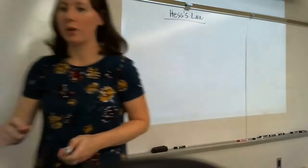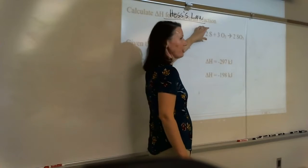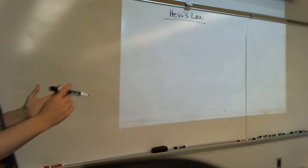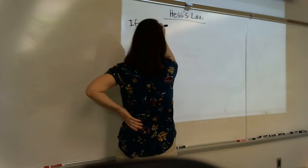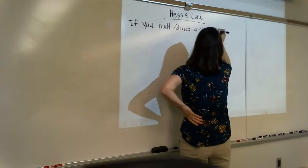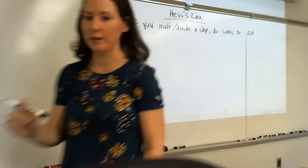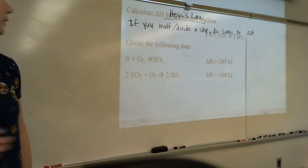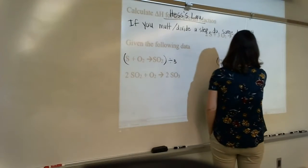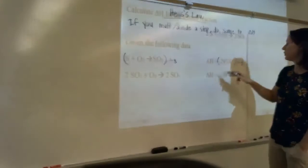There are some rules for Hess's Law. Looking at the handout, calculate delta H for the overall reaction — here's the reaction I'm interested in, and here are the sub-steps. The first rule: if you multiply or divide a step, do the same to delta H. For example, if I divided a sub-step by 3, I would also divide delta H by 3.